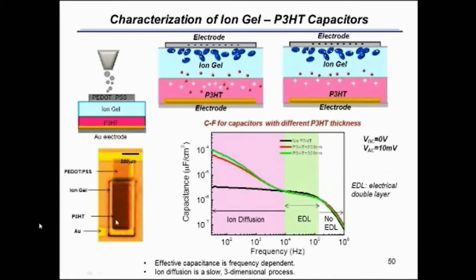We were able to print capacitors by essentially sandwiching a polymer semiconductor between an electrolyte layer and a conducting polymer and another metal electrode. This is the capacitance versus frequency response for these printed capacitors. We get very high capacitance.